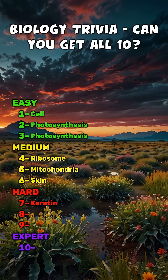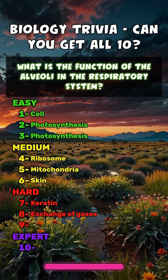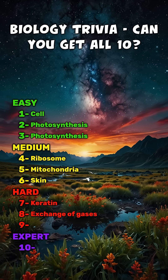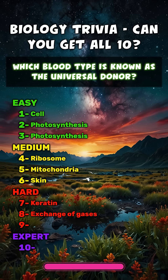What is the function of the alveoli in the respiratory system? Exchange of gases. Which blood type is known as the universal donor? O negative.